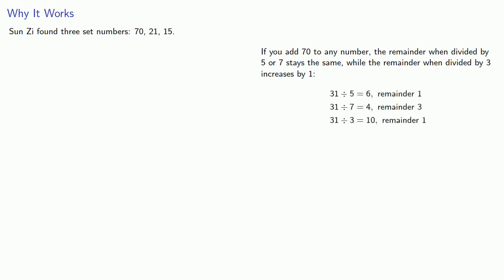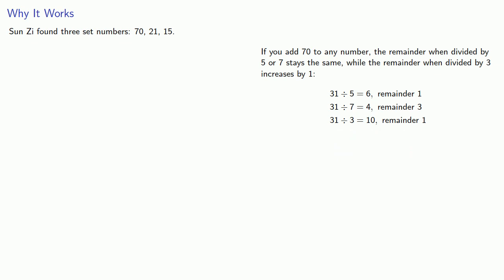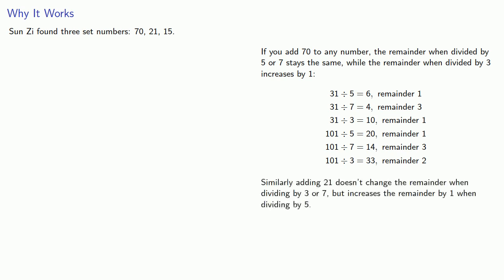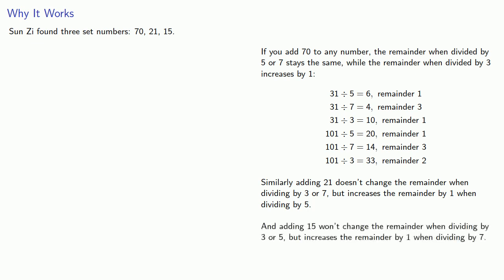For example, if we take the number thirty-one and divide it by five, seven, or three, we get remainders of one, three, and one. If we add seventy, that makes it a hundred and one. Dividing by five or seven gives us the same remainder, but when we divide by three, that remainder increases by one. Similarly, adding twenty-one doesn't change the remainder when dividing by three or seven, but increases the remainder by one when dividing by five. And adding fifteen won't change the remainder when dividing by three or five, but increases the remainder by one when dividing by seven.